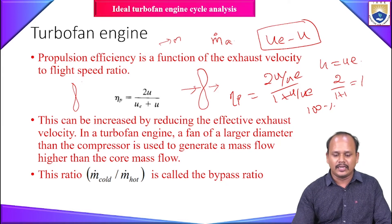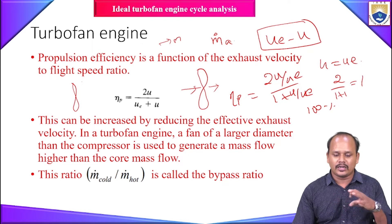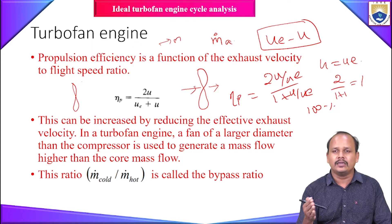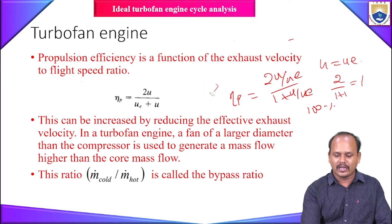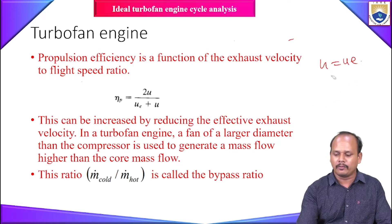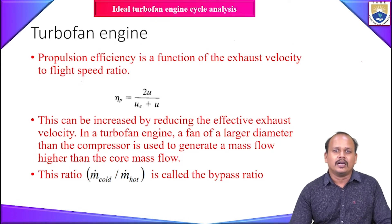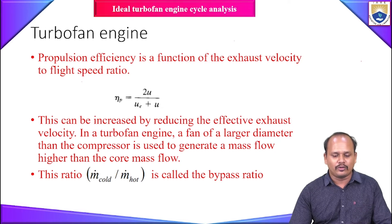The turbofan achieves better propulsive efficiency than the turbojet because it is essentially a combination of the turbojet and the turboprop, with propulsive efficiency in between the two. This is why most commercial aircraft today use the turbofan engine. The turboprop has a speed limitation — it is efficient only up to Mach 0.6 — whereas the turbofan, though less efficient than the turboprop, is still better than the turbojet and supports higher cruise speeds.